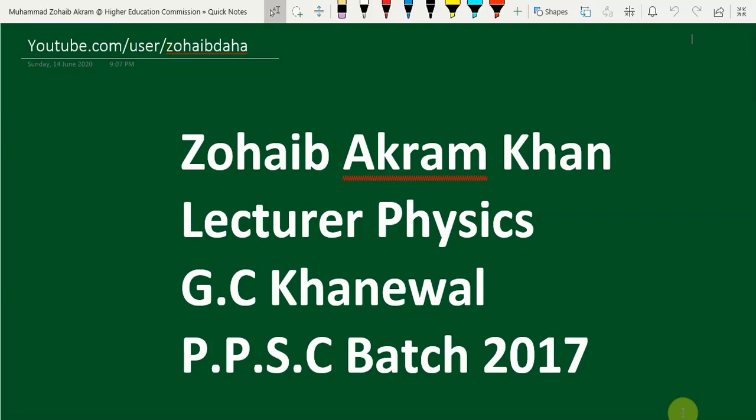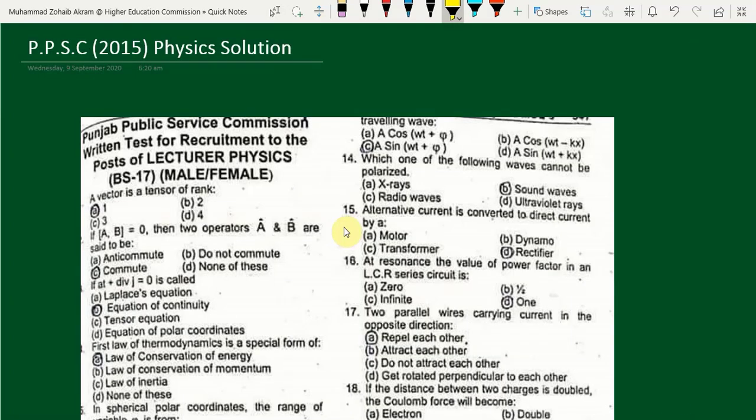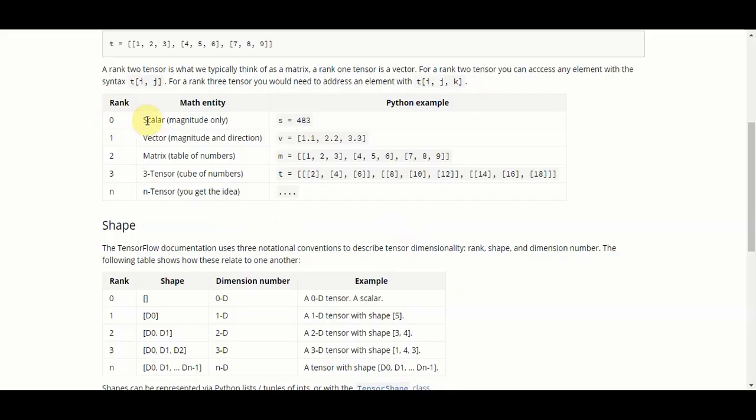Their answers are best to my knowledge. So let's start with the first question which is: a vector is a tensor of rank. Scalar ka rank 0, vector ka rank 1, matrix ka rank 2nd, or greater ranks ko hum tensors of high rank kehte hain. So for vector, the best option will be of rank 1.